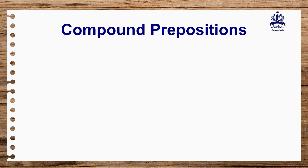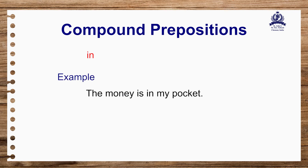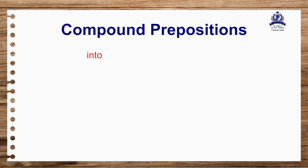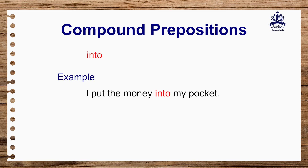First we have 'in' and 'into'. When do we use 'in'? We use 'in' to show the location of an object. For example: 'The money is in my pocket.' Where is the money? The money is in my pocket. Here, 'in' is the preposition.